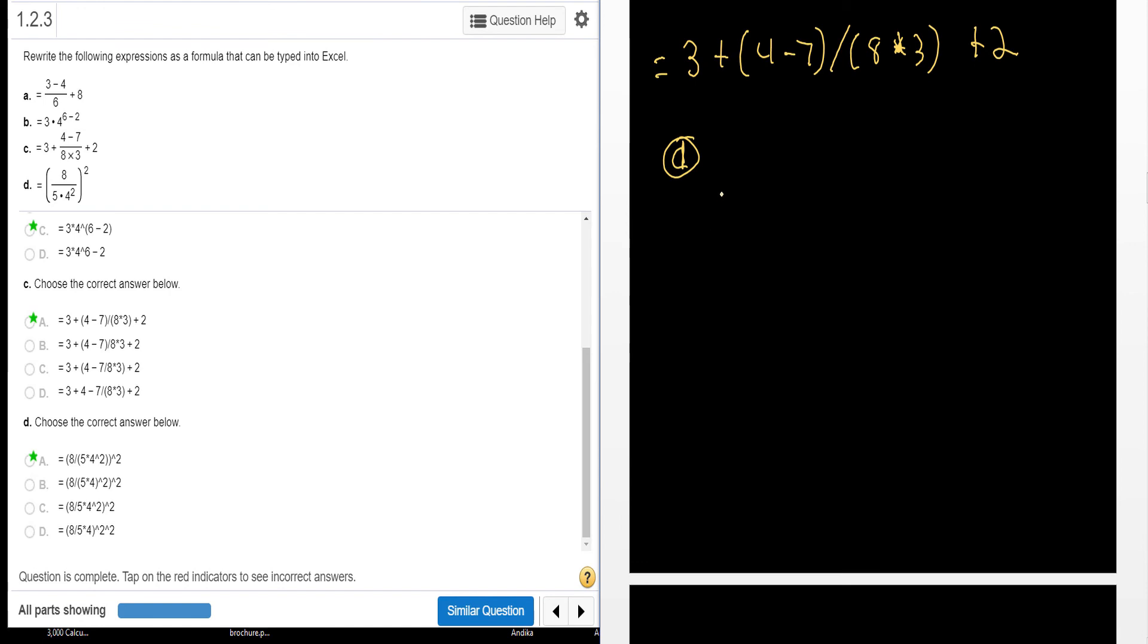Let me write this one. You're going to have 8 divided by the quantity of 5 times 4, 4 to the second power, close parenthesis. And all of that is squared.